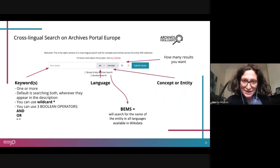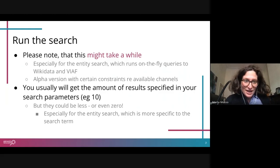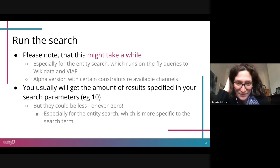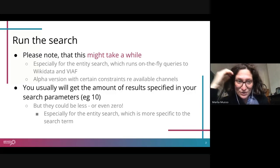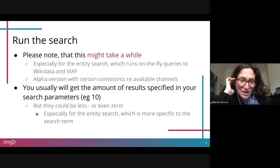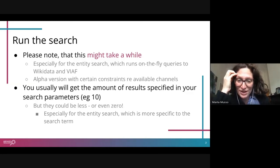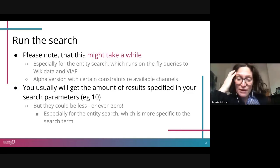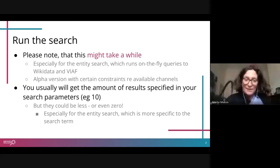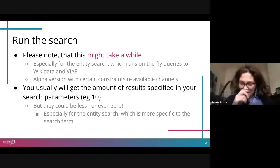When you run a search it could take a while, particularly with entity searches, as it has to go through the various datasets described earlier. There are also constraints in terms of the processing power of the machine currently running the tool. We suggest using 10 results for testing. You may see fewer results than requested, or even zero — entity search is more specific to the search term, which makes it a bit more tricky.